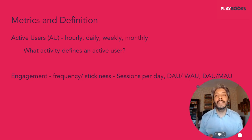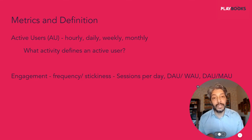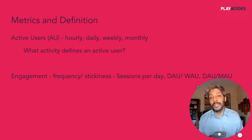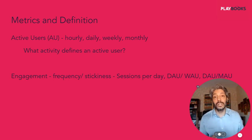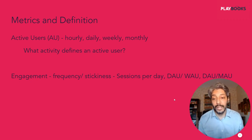When people say monthly engagement is 50%, they mean the same user turns up for half the month — 15 days out of a month. Engagement is very relevant to measure how often people come to your product and how sticky they are with your product.